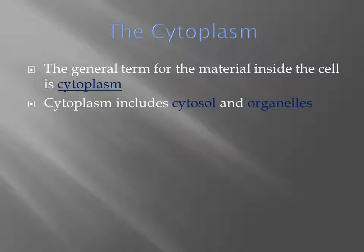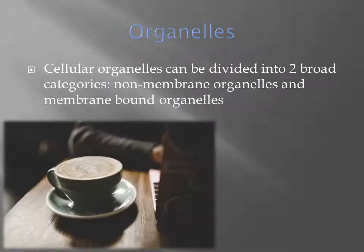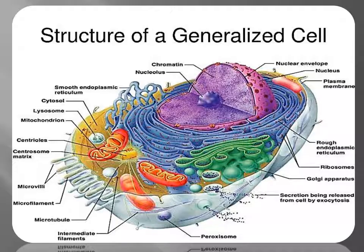The general term for material inside the cell is cytoplasm, which includes cytosol and organelles. Organelles can be divided into two broad categories: non-membrane bound organelles and membrane bound organelles. Please memorize each term with its location on the generalized cell diagram.